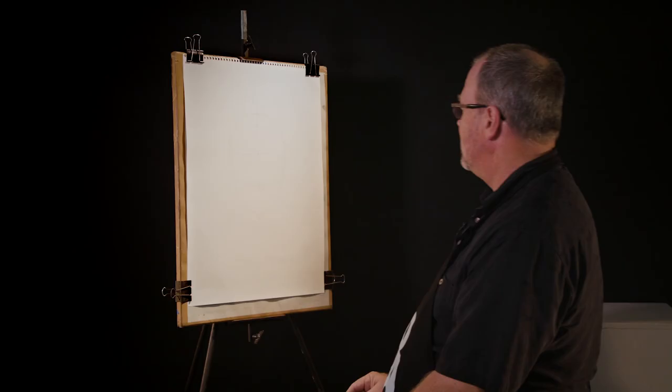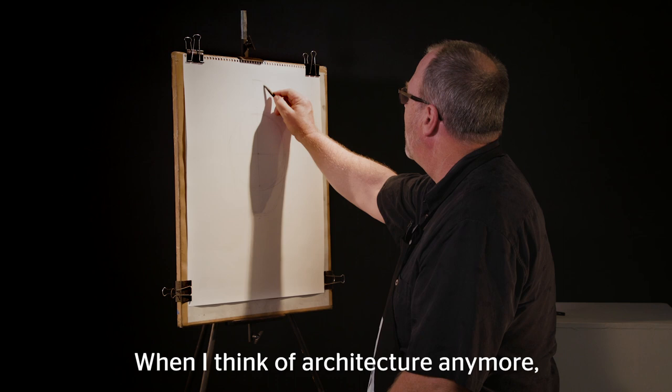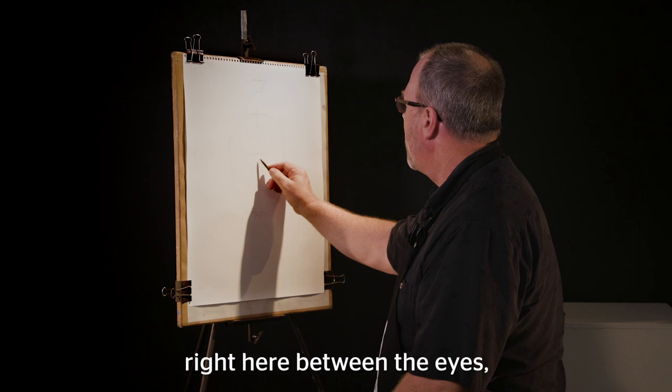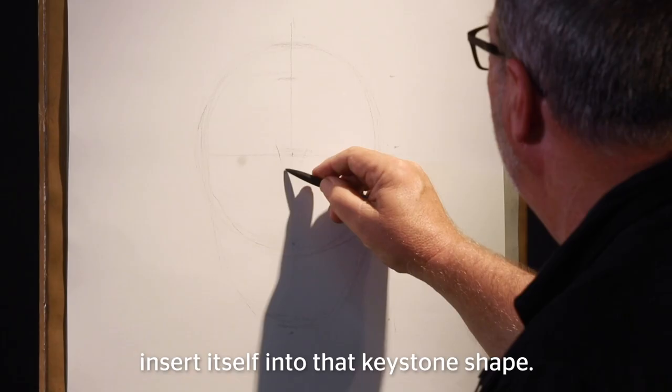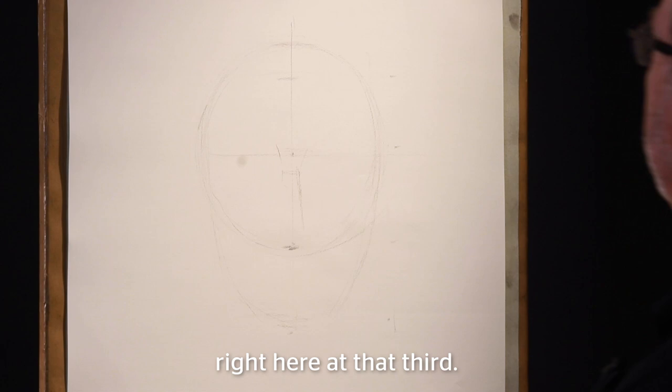And I like to start with what we call a keystone shape. I'll make a little indication. We don't think of architecture anymore, but when we were building a stone arch, you had a keystone shape at the top of an arch. And that's what we're going to put right here between the eyes. And the nose, the cartilage of the nose is going to insert itself into that keystone shape. And we're going to make the base of the nose right here at that third.